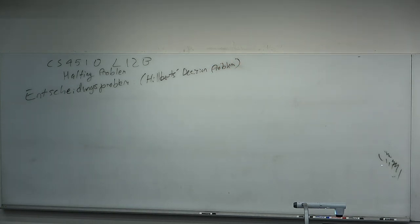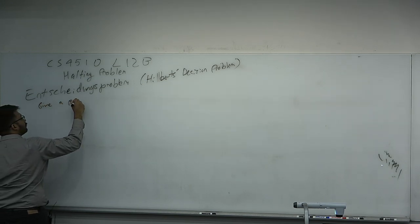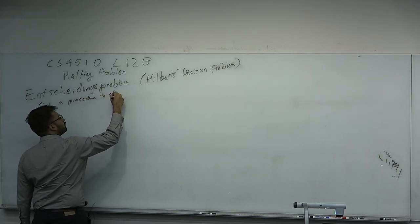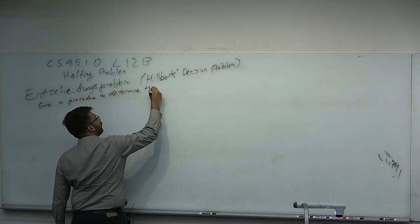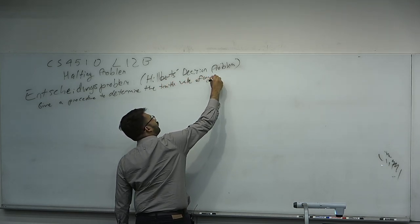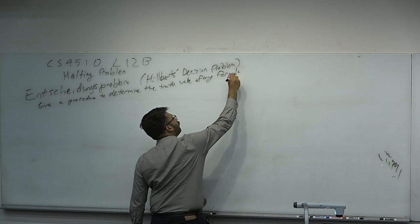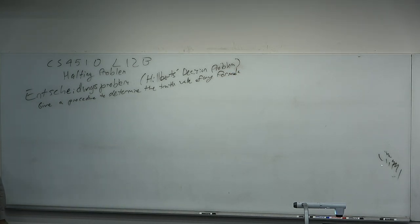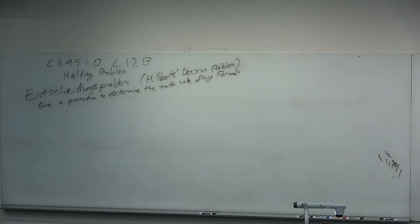It has a very technical statement and can be reformulated in many ways. One of them is: give a procedure to determine the truth value of any formula. He was asking for a procedure to determine if any formula can be either true or false. A formula is one with no free variables, so it must be assigned a truth value. Now, expressing a formula within the system is very different than proving the formula within the system.